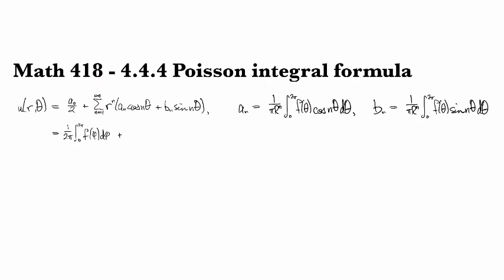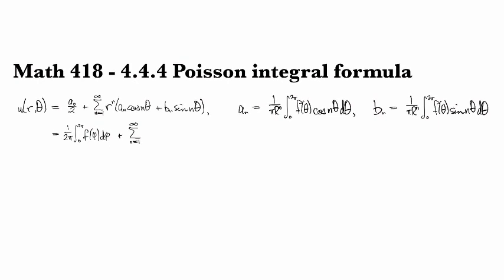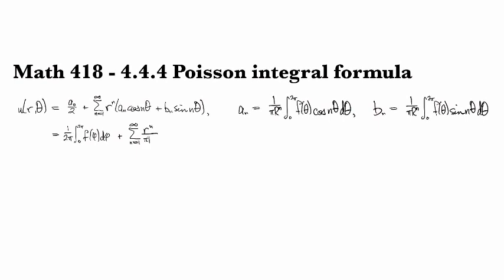And then we've got the rest of the series here, so n equals 1 to infinity. And by combining terms, we have r^n over π R^n.